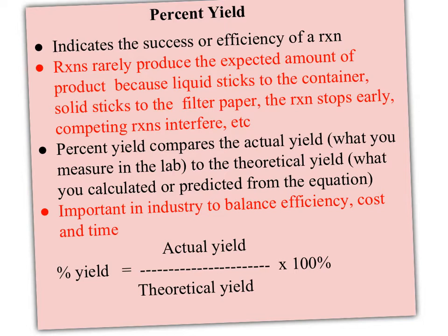What we've been talking about with stoichiometry and limiting reactants is predicting if every single reactant molecule available for the limiting reactant actually reacted and formed product, how much would you get?